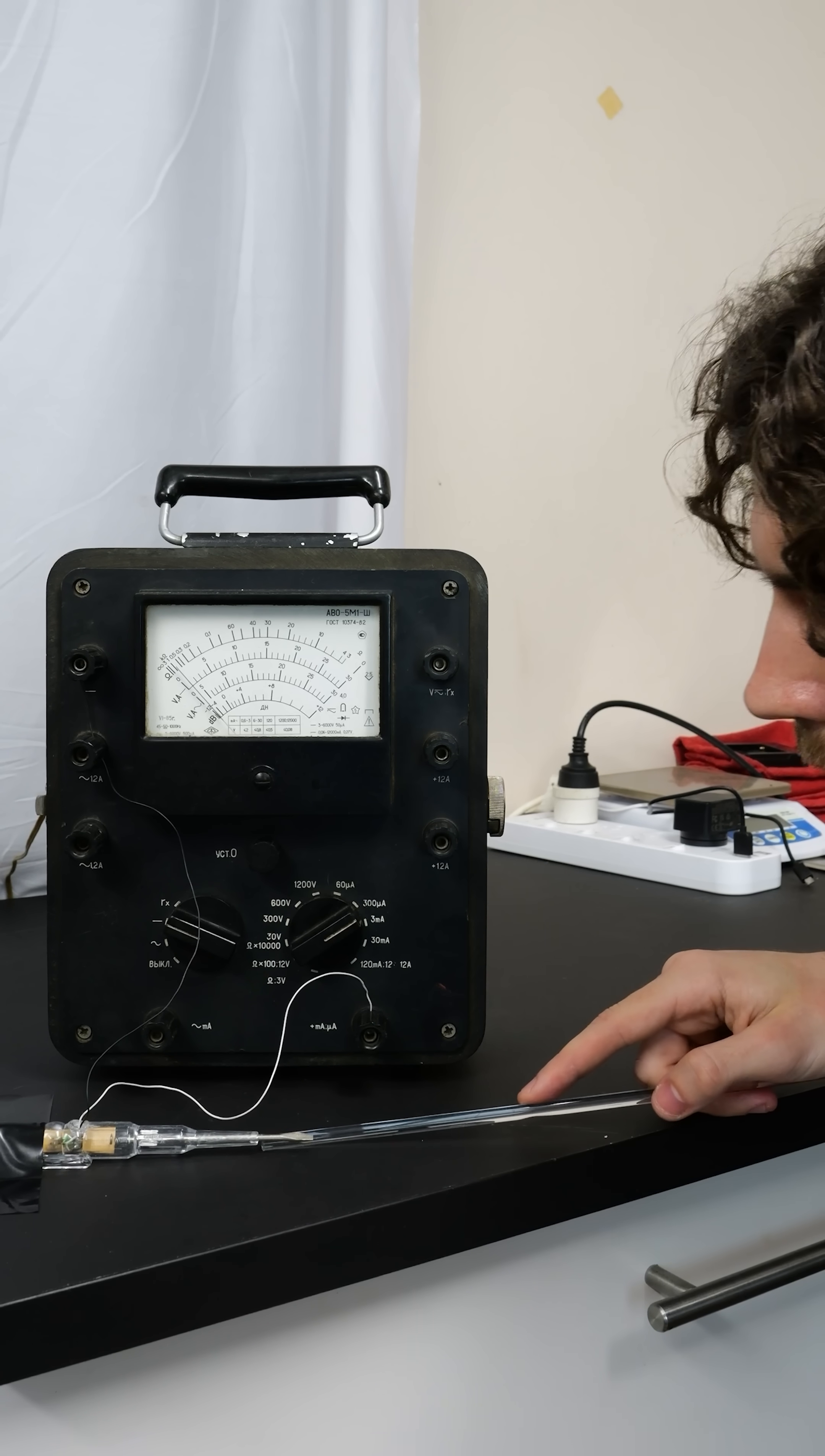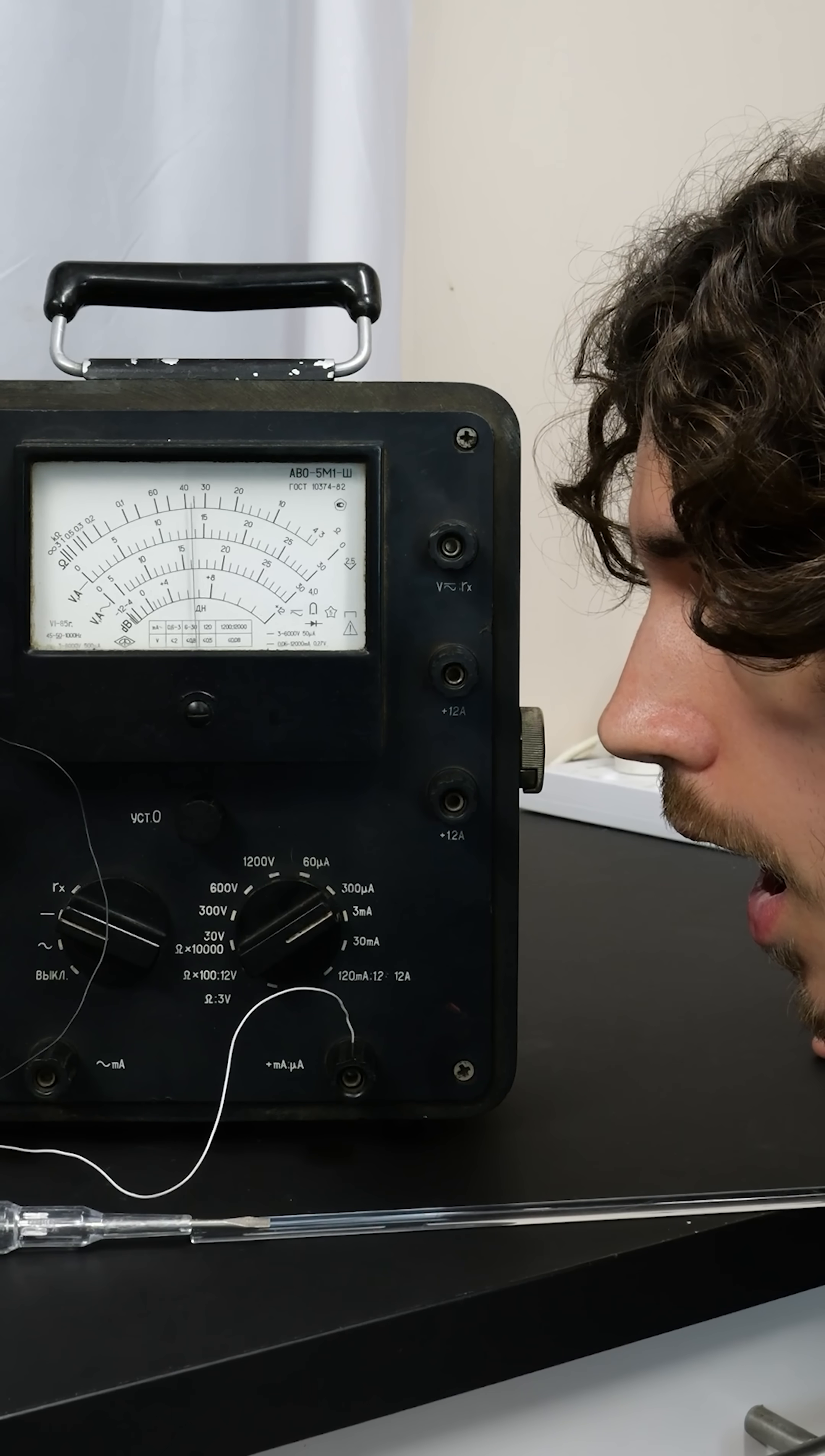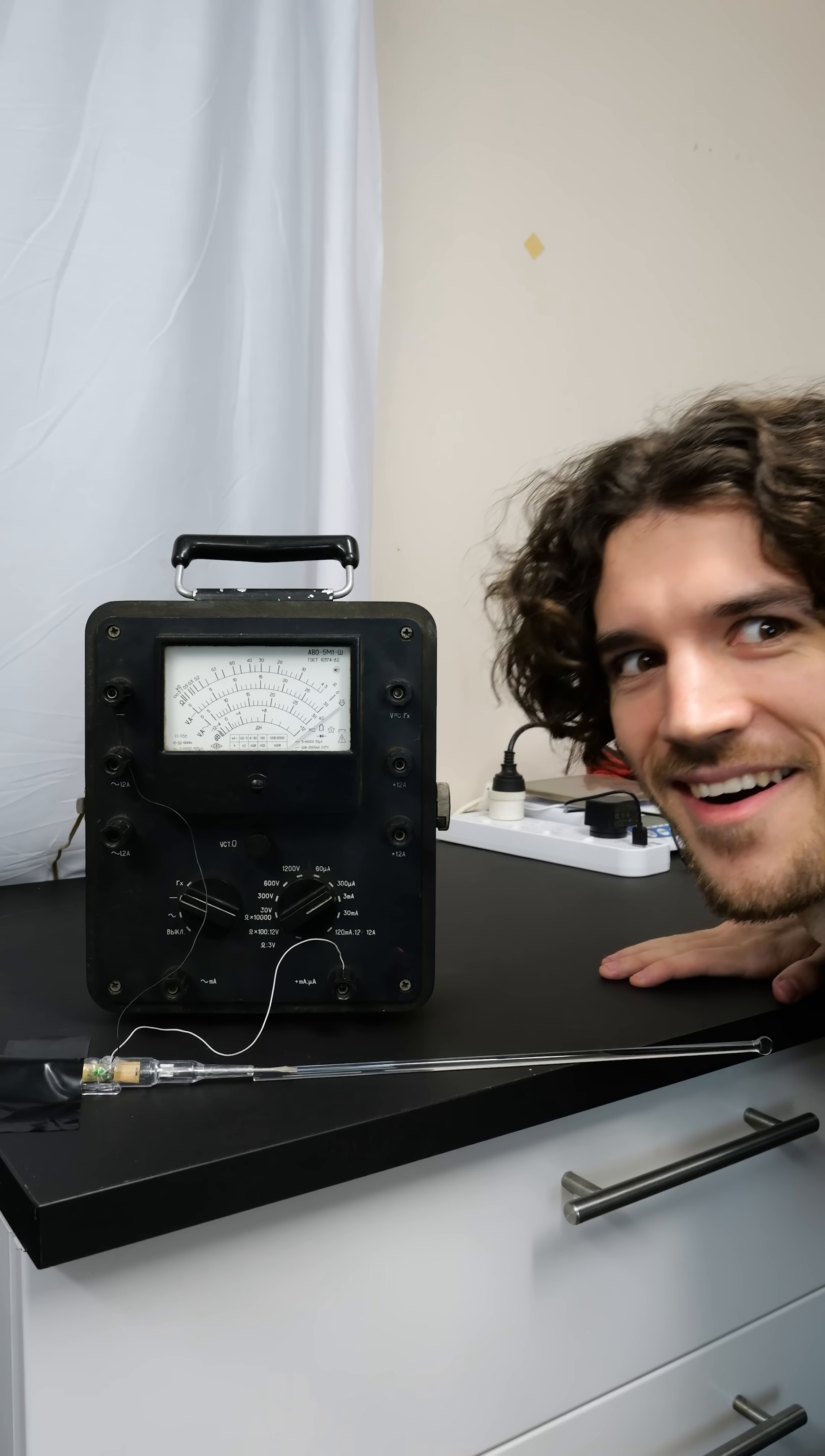To prove it's moisture doing this, I breathed on it. Oh god, okay. The glass is still an insulator, but the tiny layer of moisture turns it into a weak conductor.